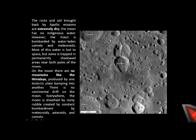The part completely exposed to the sun has a boiling temperature while the opposite side does not. Rock and soil brought back by the Apollo missions from the moon are extremely dry, pointing to no water. However, the moon was bombarded with water-laden comets and materials earlier, but most of that water constantly gets lost into space. There are no mountains like the Himalayas, but tectonic activity exists. There is no continental rift, so land masses are all together. Everywhere the moon is shattered by rubble created by constant activity of meteorites, asteroids, and comets.